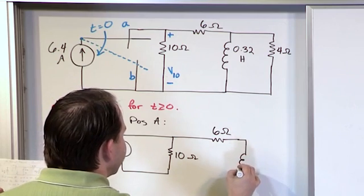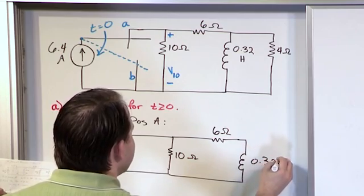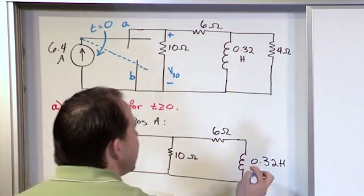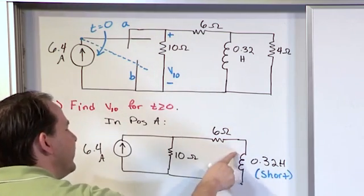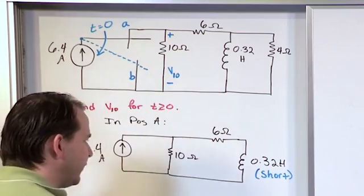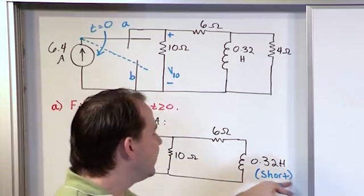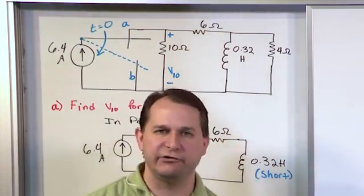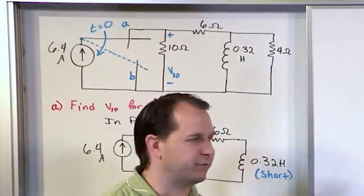And we do have the inductor here, which is 0.32 Henrys, but I'm going to remind you and kind of in parentheses that this looks like a short. So I'm drawing the inductor symbol because I want you to remember that there is an actual inductor here. And I just put a straight line here for a wire. But I'm reminding you in parentheses that the inductance, since it's been sitting for a long period of time, nothing is changing. There's no voltage drop across this. It's effectively looking like a short circuit.